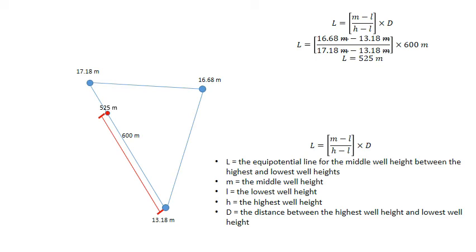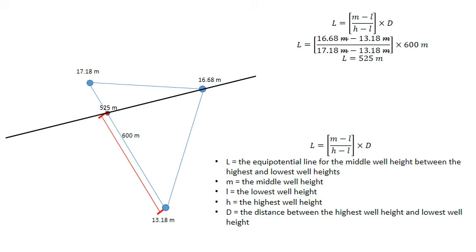You draw a line then coming from the middle well height, because that point is where the 16.68 metres sits along this distance between the 17.18 and the 13.18. That point right there is where the 16.68 metre line crosses, and that's called the 16.68 metre equipotential line.